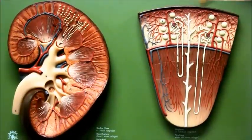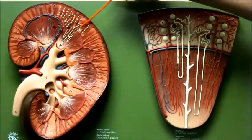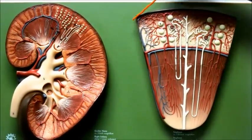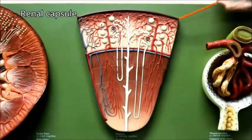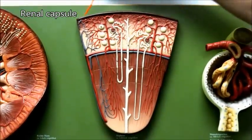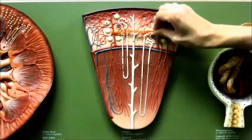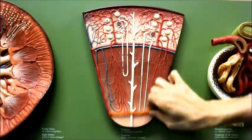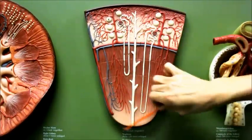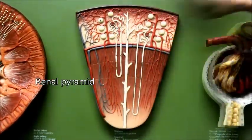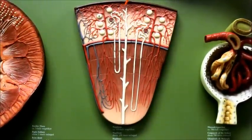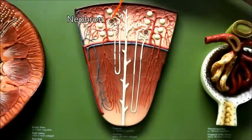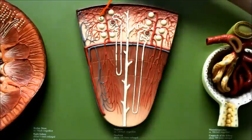Now we're going to look at this middle panel, which is an enlargement of this area. This layer of the kidney is the renal capsule — the brown tissue layer covering the kidney. This major layer is the renal cortex, and this is the renal medulla. This particular part of the renal medulla is the renal pyramid. The kidney contains the basic filtering unit called the nephron, and the nephron is composed of the renal corpuscle.